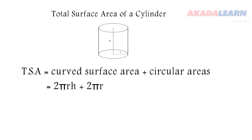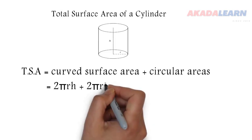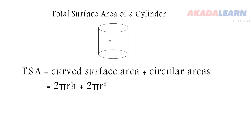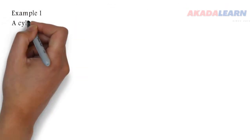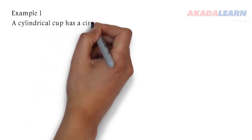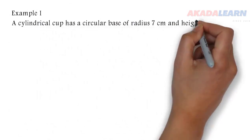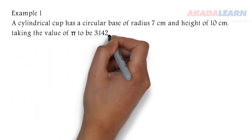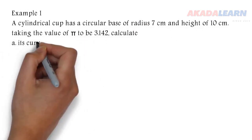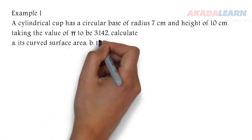Now let's see an example. A cylindrical cup has a circular base of radius 7 centimeters and height of 10 centimeters. Taking the value of π to be 3.142, calculate its curved surface area and the area of its circular base.